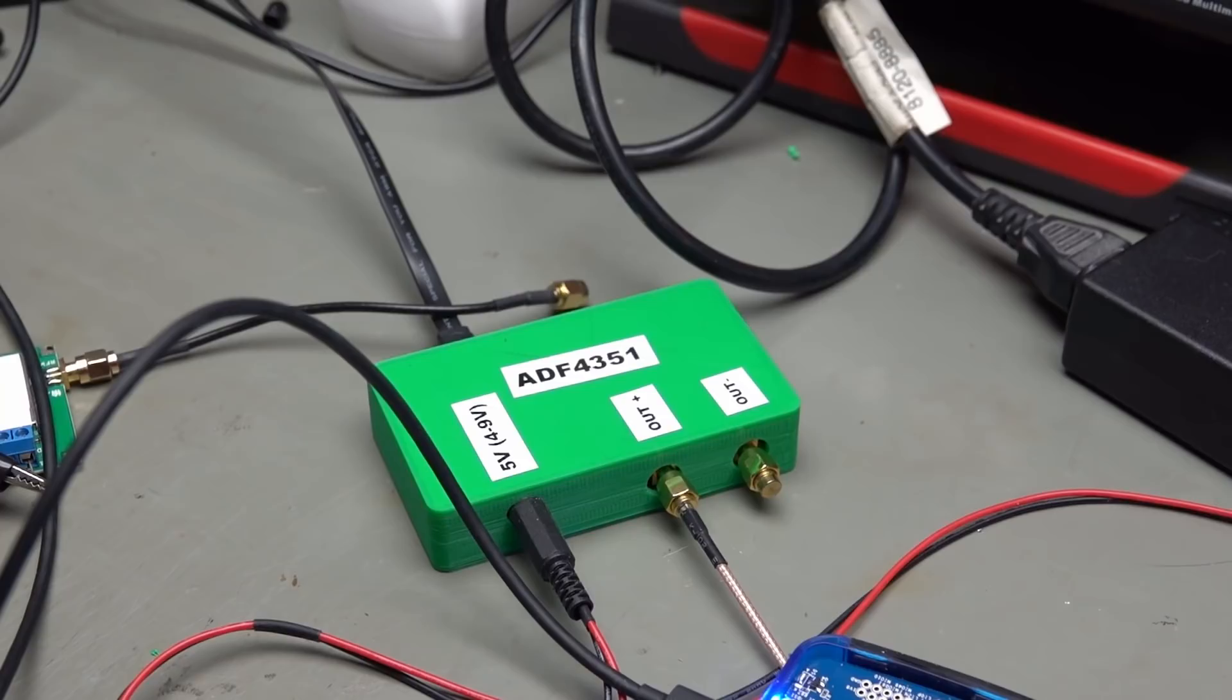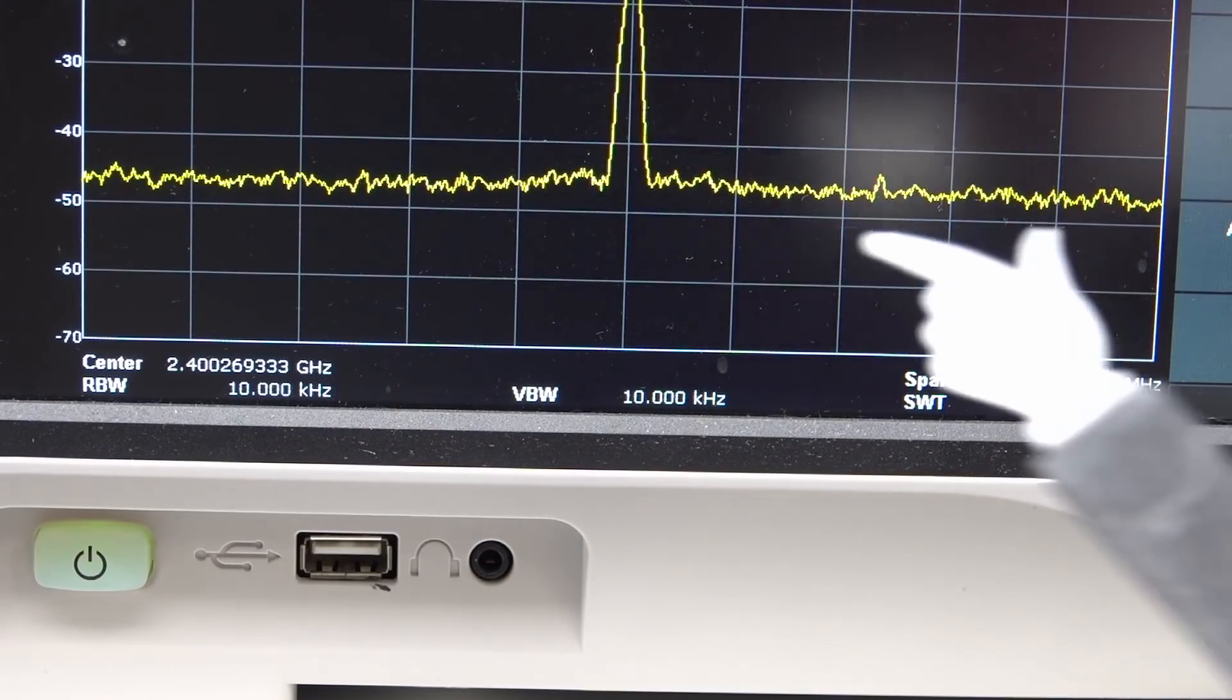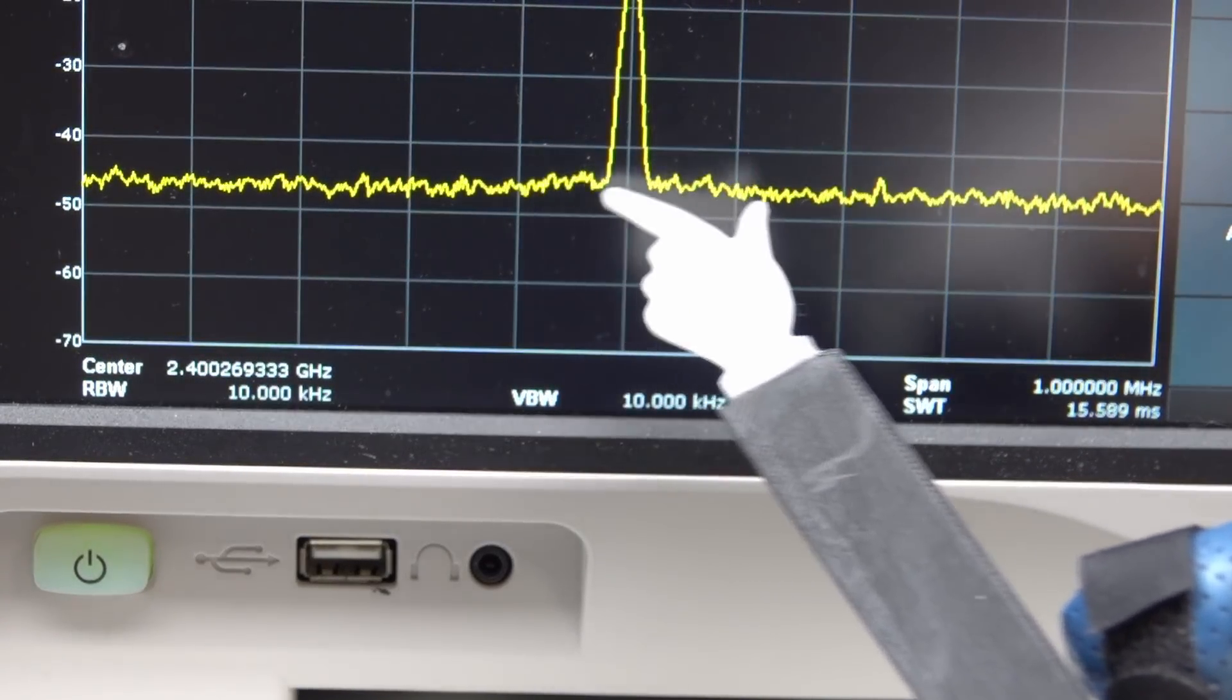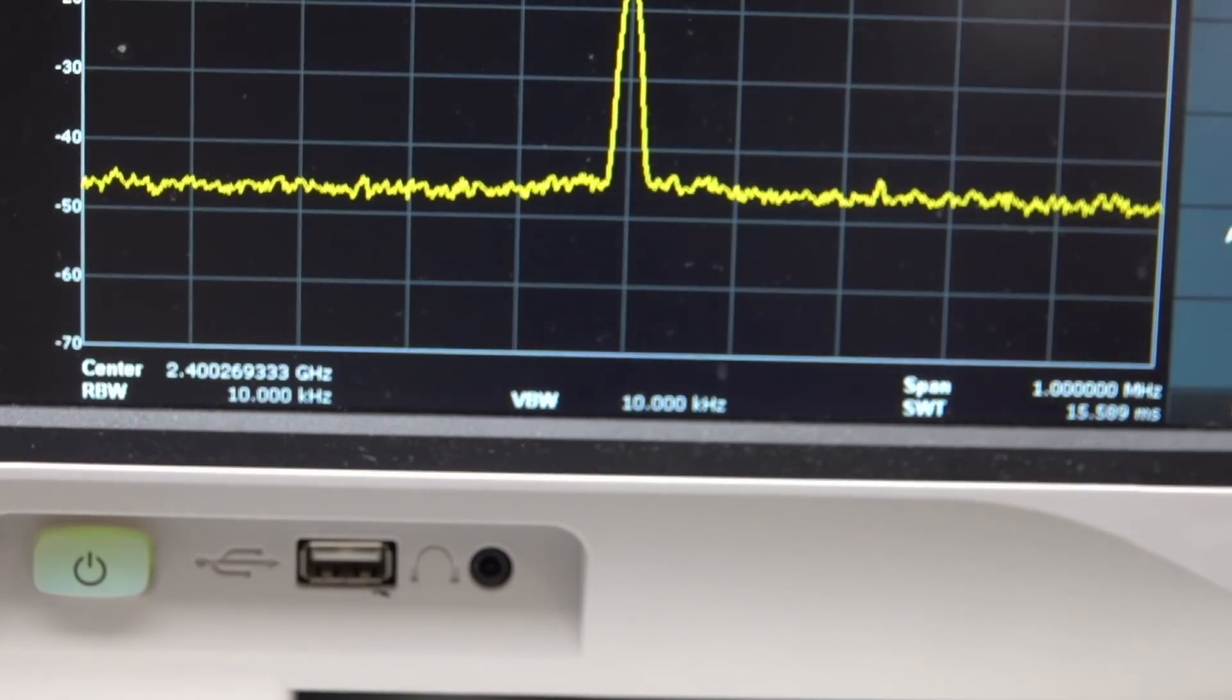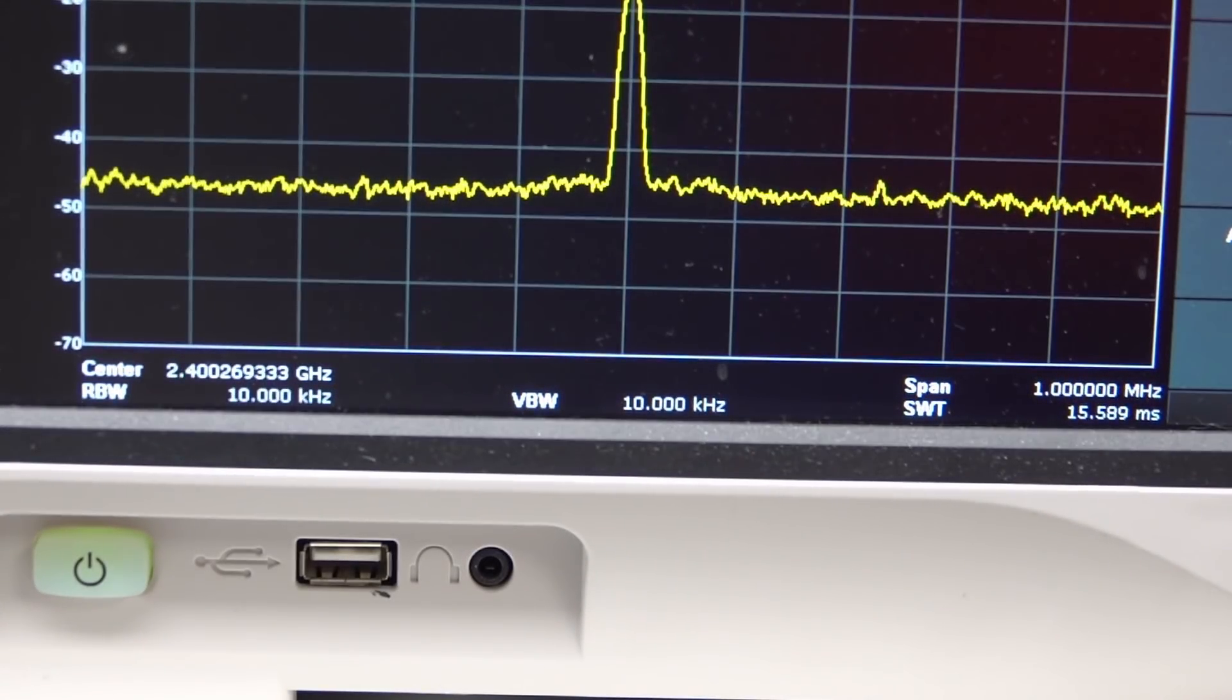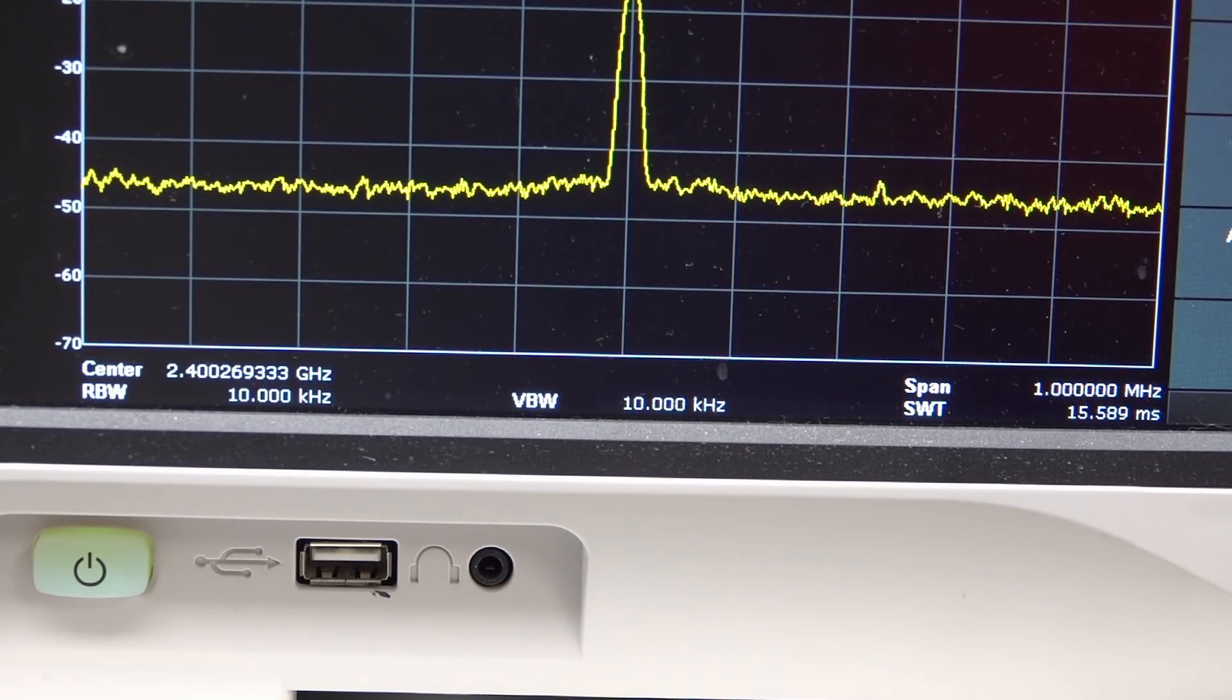If we reduce the power to minus 15 dBm, these frequencies are still there. So it seems that they come from the deep soul of the Pluto. And not from any overdriven amplifier.